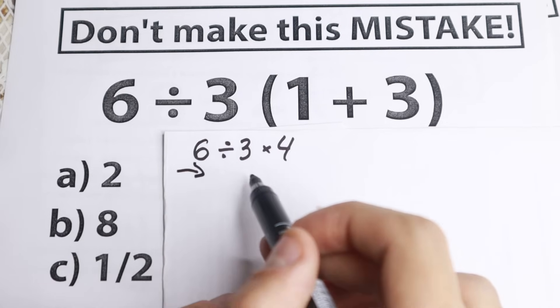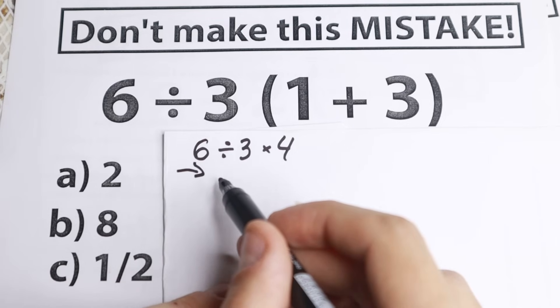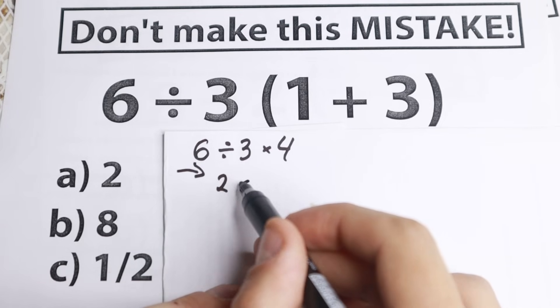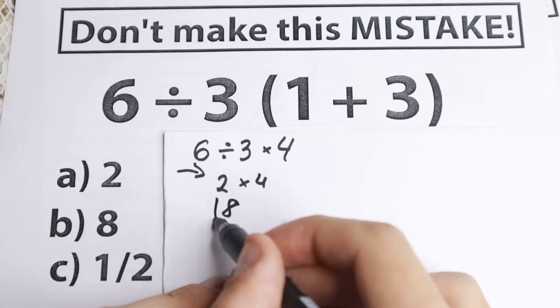From left to right: first take 6 divided by 3 equals 2, and then multiply by 4. As a result, 2 times 4 equals 8.